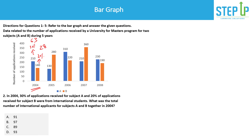The total number of international applicants for subjects A and B together in 2004 is 63 plus 28, which equals 91. This is extremely easy.